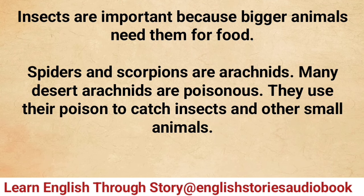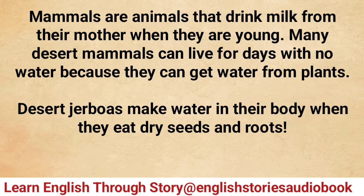Spiders and scorpions are arachnids. Many desert arachnids are poisonous — they use their poison to catch insects and other small animals. Mammals are animals that drink milk from their mother when they are young.